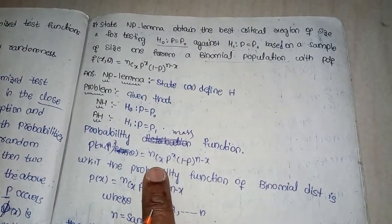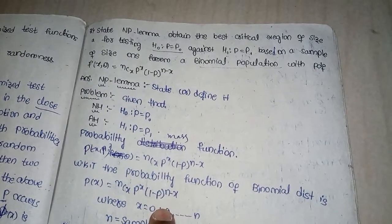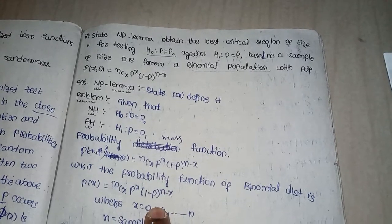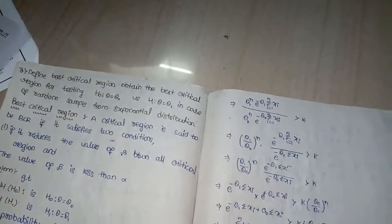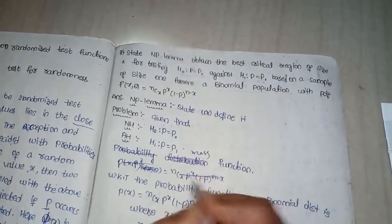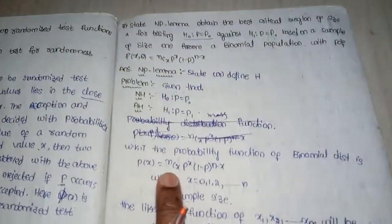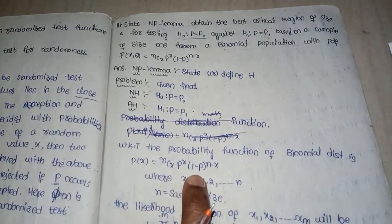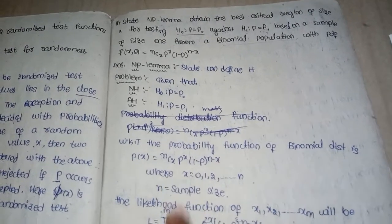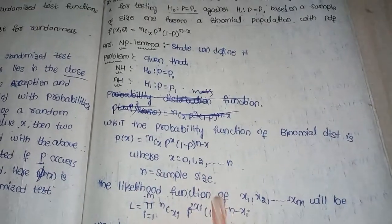The probability mass function of binomial distribution is P(x) = NCX * P^X * (1-P)^(N-X), where X takes values 0, 1, 2, 3, and so on, and N is the sample size.